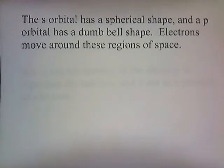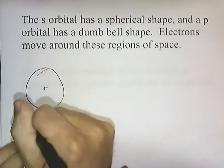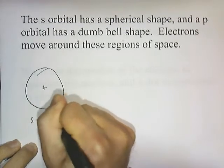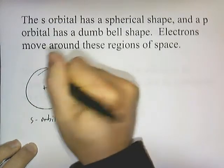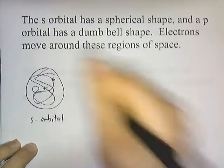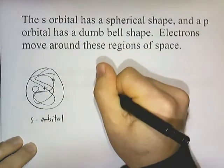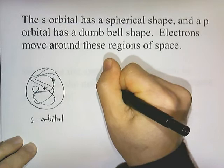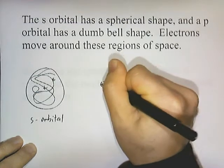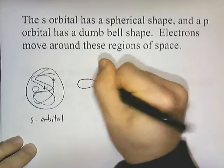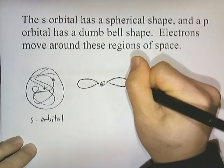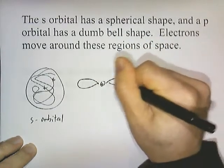The S orbital has a spherical shape, and a P orbital has a dumbbell shape. Electrons move around these regions of space. For an S orbital, the electron will randomly move around the spherical area. For a P orbital, the P orbital has this dumbbell shape, and an electron — which I'll use a dot to represent — sort of randomly moves around these areas.